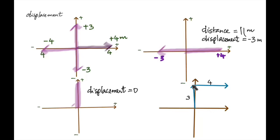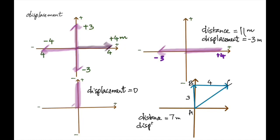Five meters — not meter per second, it's displacement, it's five meters. How do you get the five? It's a right-angle triangle; apply the Pythagorean theorem. Square this, square this, add them, take the square root. So AC, which is the displacement, is only five meters; distance is seven meters.